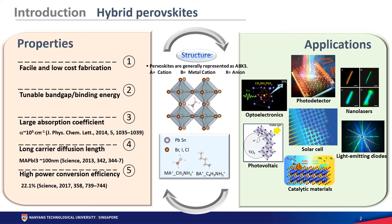Perovskites have a very long carrier diffusion length, which makes them very useful for solar cell applications. They can also be used for light emission. So there are a lot of potential applications in optoelectronic devices, photodetectors, light-emitting diodes, photovoltaics, and so on.